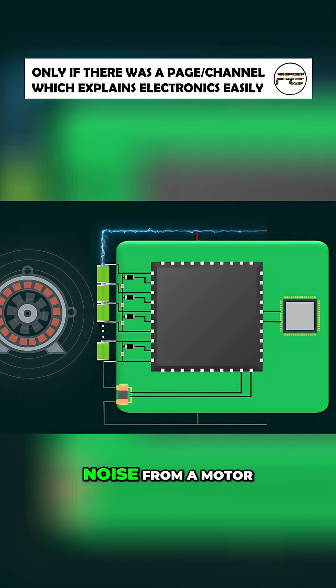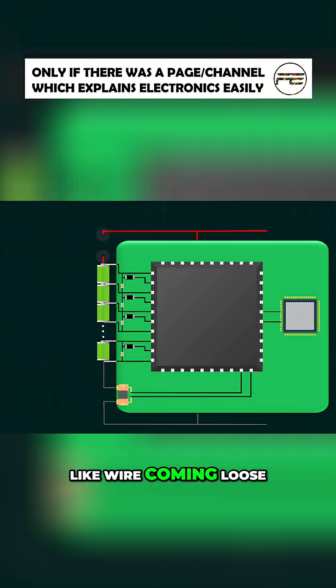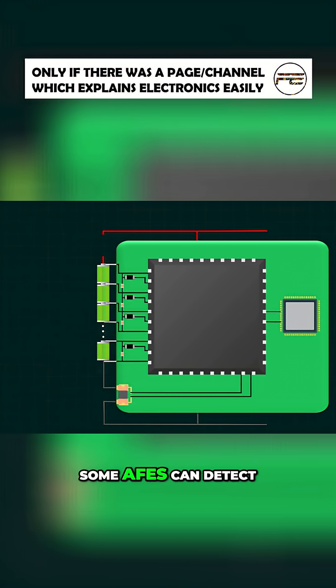Things like voltage spikes, noise from a motor, and even failure conditions like a wire coming loose—some AFEs can detect an open connection to a cell.